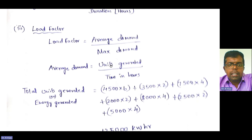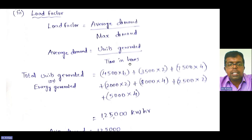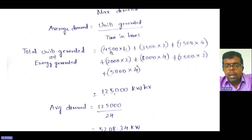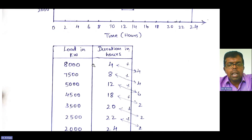Next, we calculate the load factor. Load factor equals average demand divided by maximum demand. Average demand equals units generated divided by time in hours. To find total units generated, multiply each load by its duration: 4500 × 6, plus 3500 × 2, plus 7500 × 4, plus 2000 × 2, plus 8000 × 4, plus 2500 × 2, plus 5000 × 4.